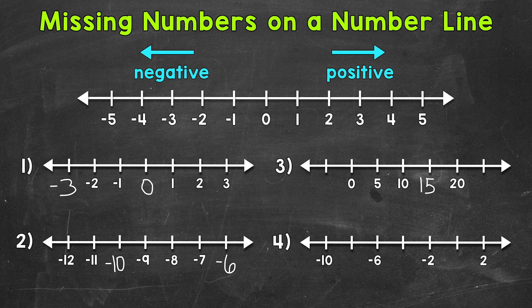Then we have twenty and then twenty-five. Now we need to go left on our number line, decrease in value, and count down. Let's start from twenty-five and go all the way through to fill in the remaining missing number. Twenty-five, twenty, fifteen, ten, five, zero, and then negative five. So for that one, we were counting by five.